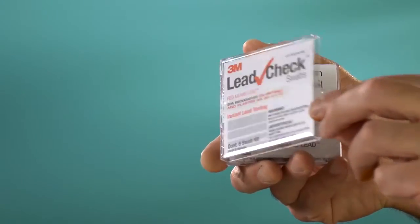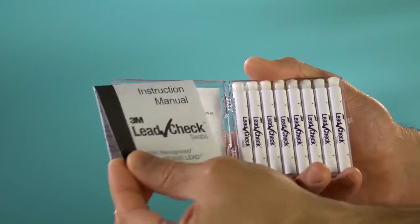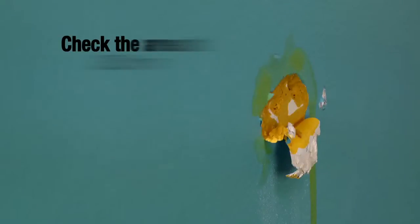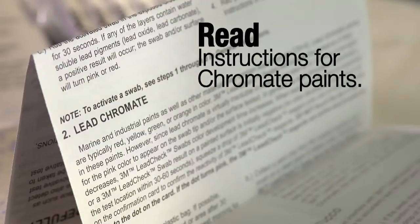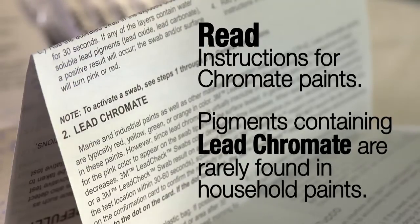Testing some industrial paints requires longer development time. Make sure to check the area at 30 minutes and again at 1 hour for red color development. Read the instructions regarding chromate paint in your instruction sheet for more information. Pigments containing lead chromate are rarely found in household paints.